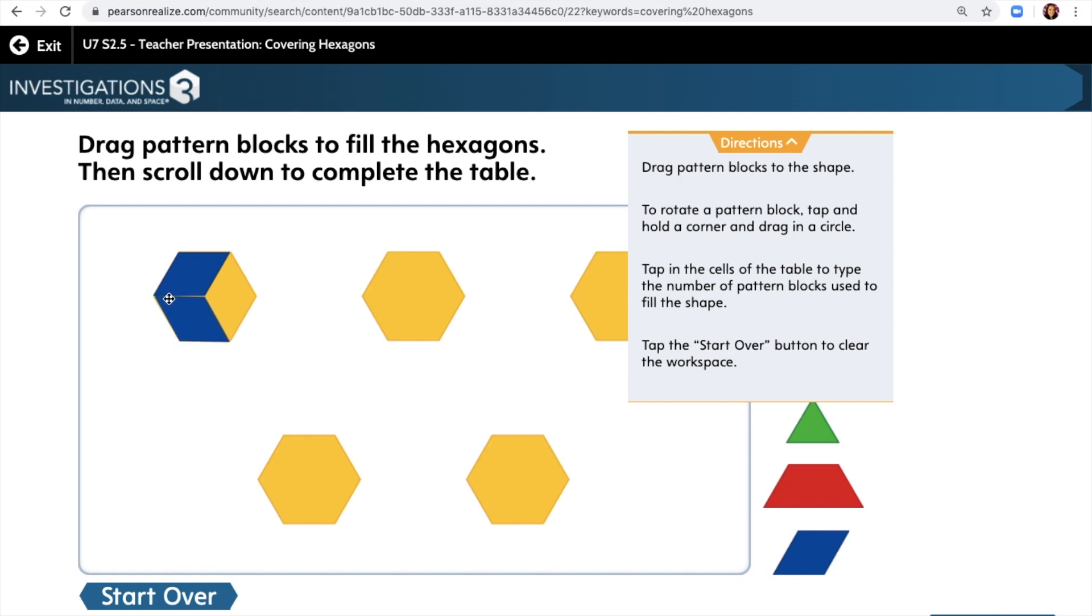I'm going to put that one there. Can you tell how many more rhombuses we need by just looking at it? Looks like we need one more, but let's just check. Is that the right way to drag it? Oh no, what's happening?